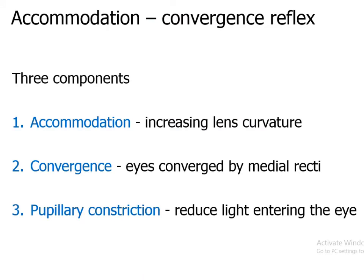The Accommodation Convergence Reflex has three components. Number one: accommodation, which means increasing the curvature of the lens. Number two: convergence, which means the adduction of the two eyes by the contraction of the two medial recti.